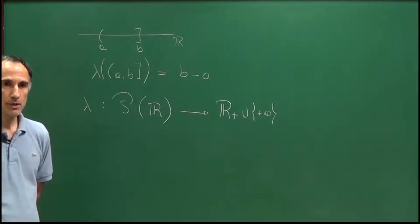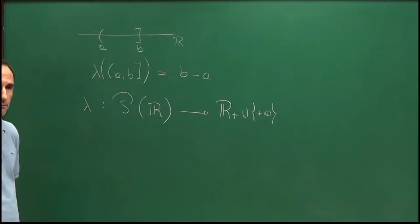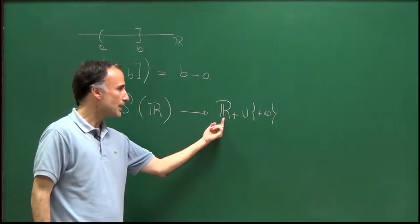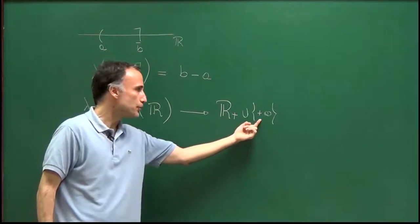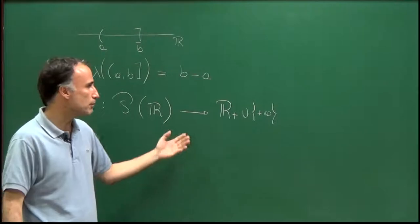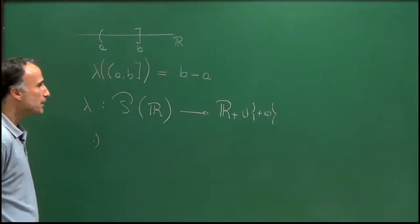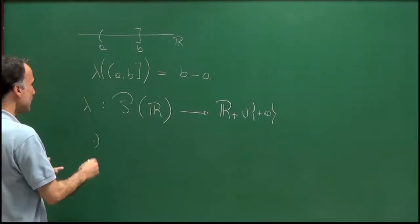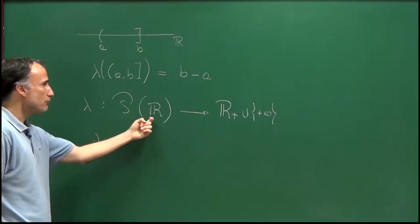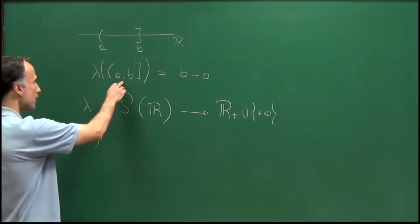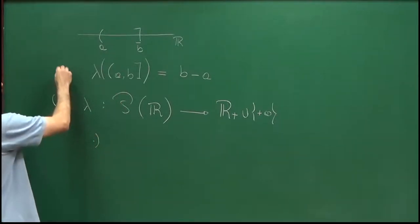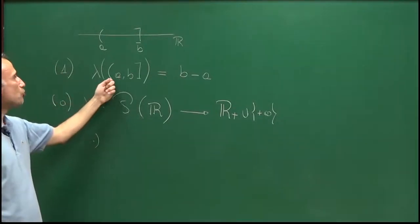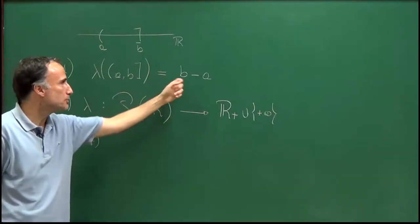What are the properties we expect lambda to satisfy? Note that I'm defining lambda as taking values in R+ union {+∞}. Eventually, if you take an infinite interval, its measure will be plus infinity, so I have to add plus infinity. Let me call this property 0: we would like the measure of an interval (a,b), which can be open or closed on the left, open or closed on the right, to be b minus a.